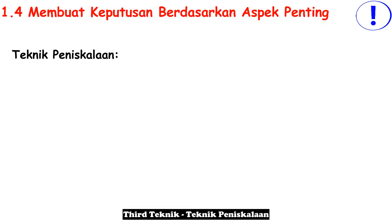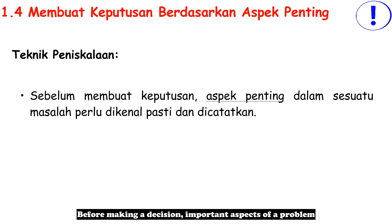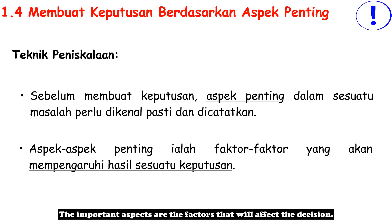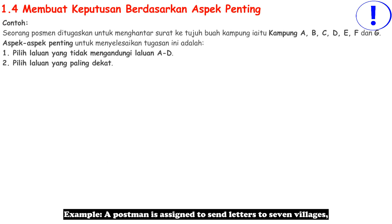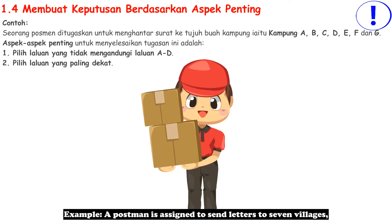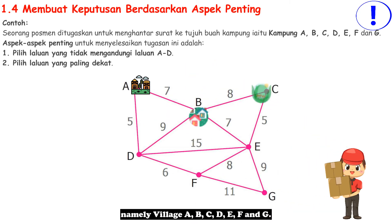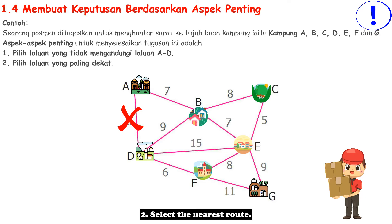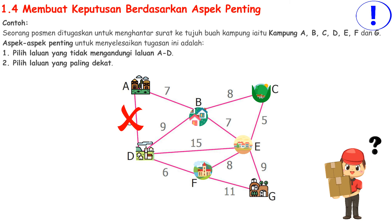Third technique — Teknik Peniskalaan (abstraction). Before making a decision, important aspects of a problem must be identified and recorded. The important aspects are the factors that will affect the decision. Example: a postman is assigned to send letters to seven villages — A, B, C, D, E, F, and G. The important aspects to complete this task are: first, select a route that does not contain dead-end roads; second, select the nearest route.